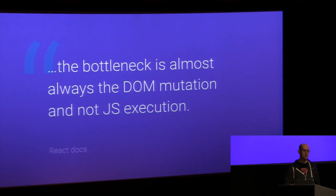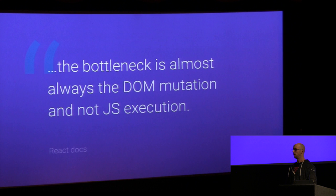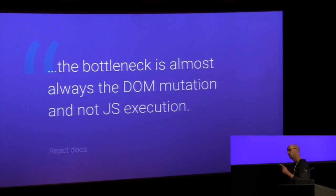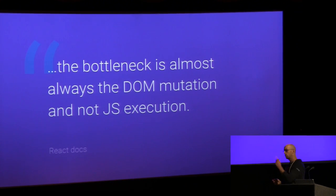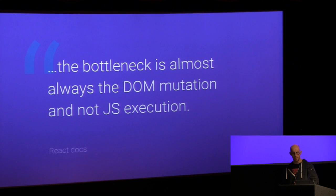But the docs say: 'The bottleneck is almost always the DOM mutation and not JavaScript execution.' And I thought — if I write vanilla, I'd mutate the DOM. And when React is done, it will mutate the DOM. The only difference will be the JavaScript execution that we both go through to get there. This doesn't make sense.